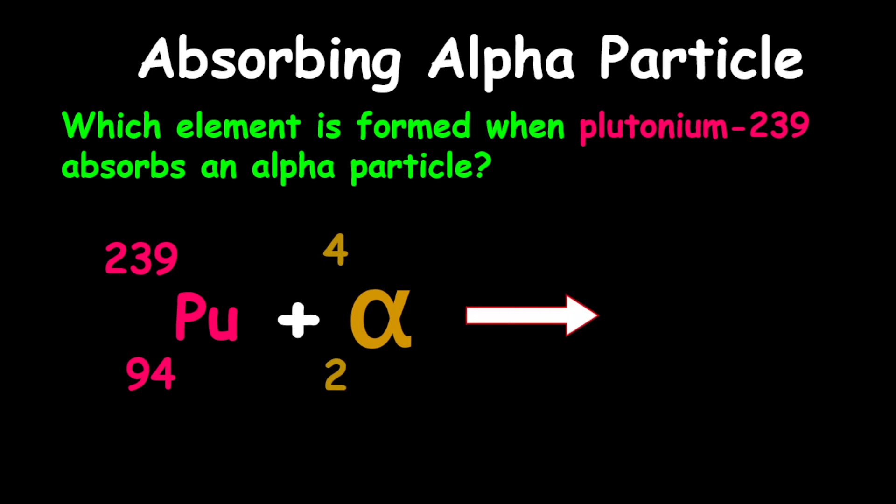To get the product, we're going to add the mass numbers. Therefore, 239 plus 4 gives us 243. To determine the proton number, we're going to add 94 and 2. Therefore, we get 96.